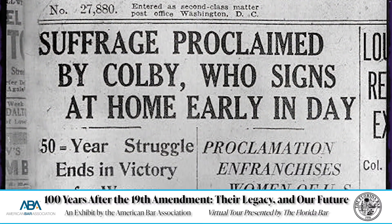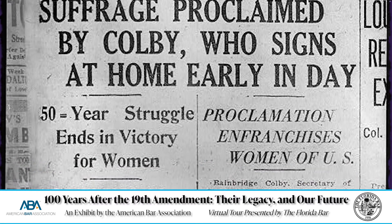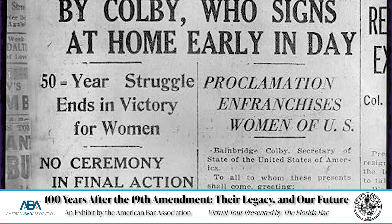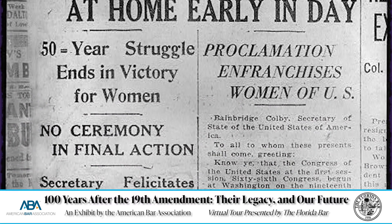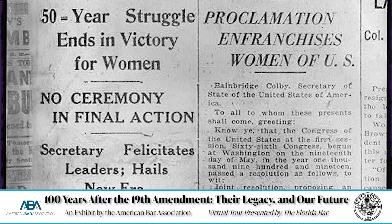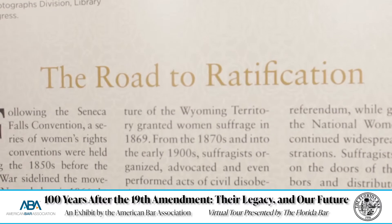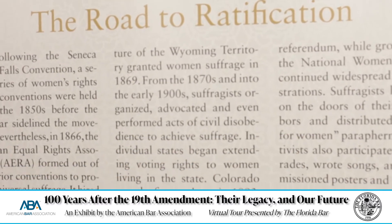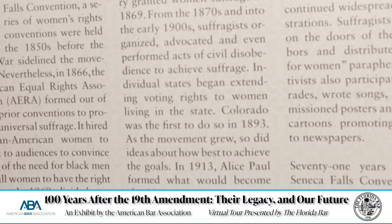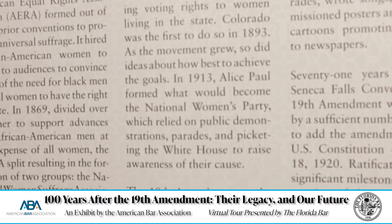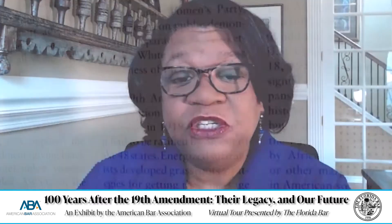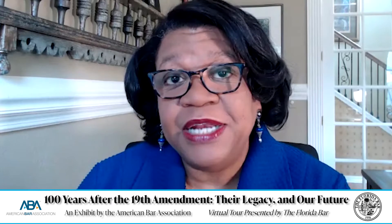The 19th Amendment to the Constitution, providing for the right to vote for women, was adopted by Congress in 1919 and sent to the states for ratification. From there, it had to be ratified by three-fourths of the states, which at the time was 36 out of 48 states. Finally, in 1920, Tennessee became the 36th state to ratify the 19th Amendment, and the amendment was added to the United States Constitution.